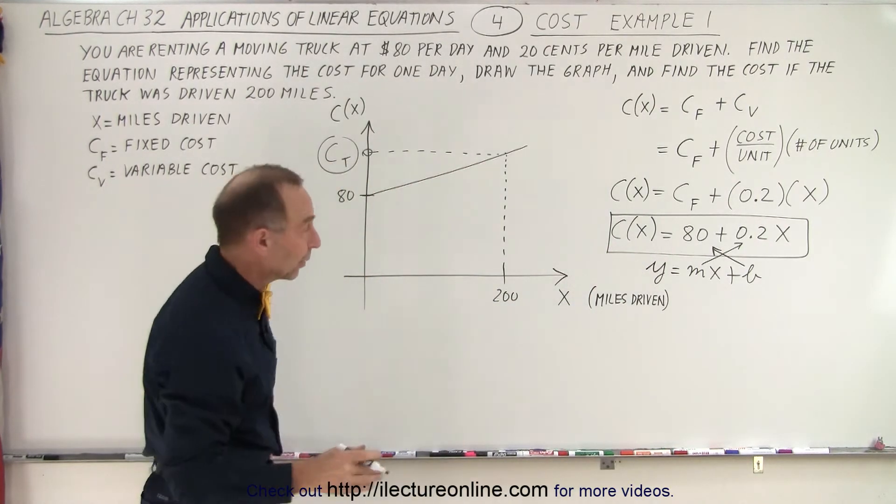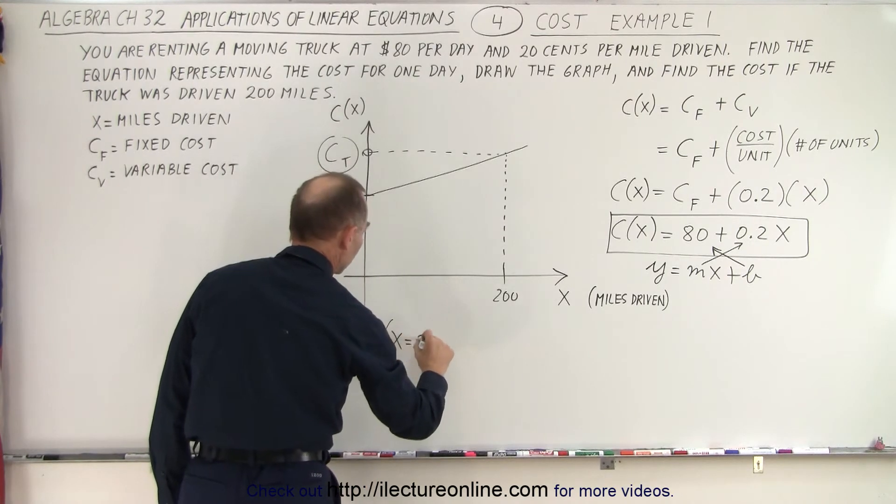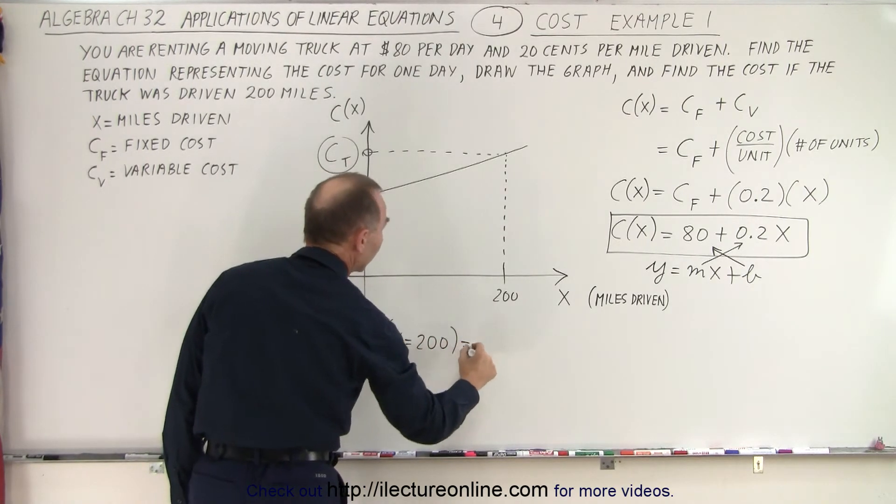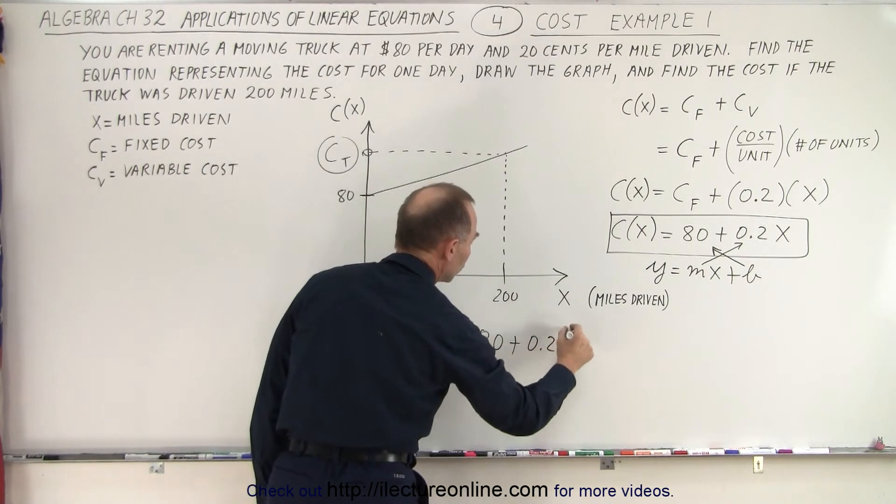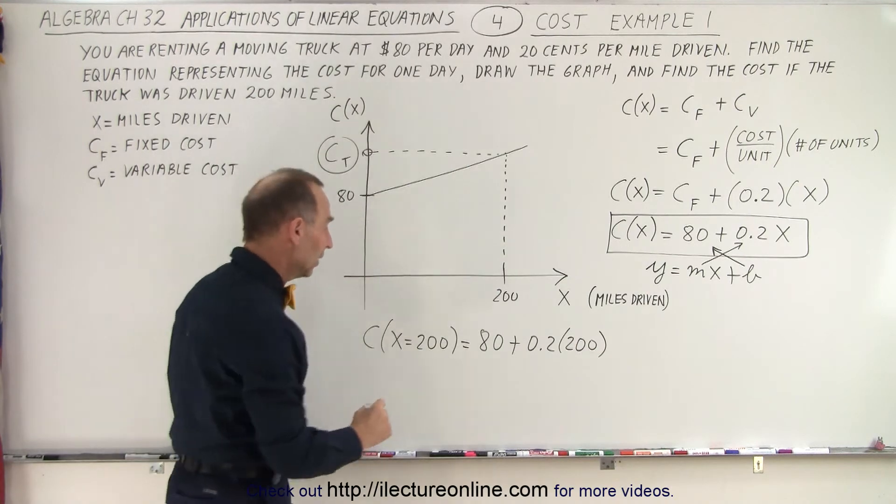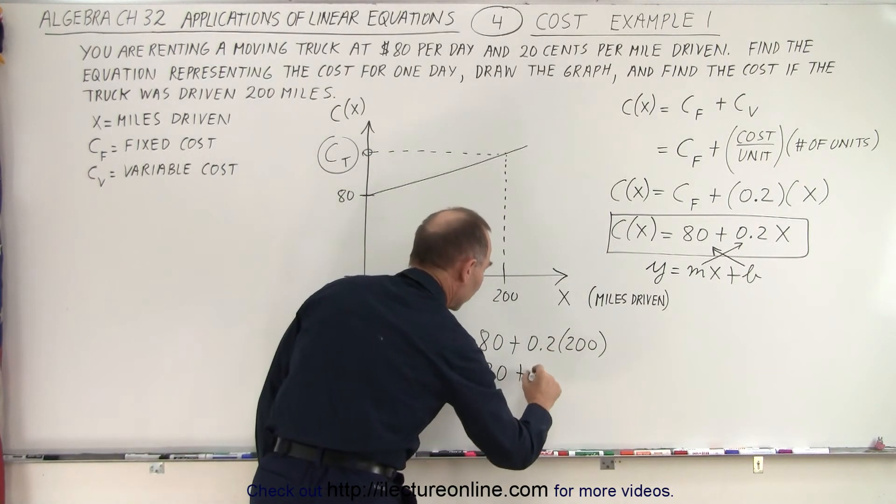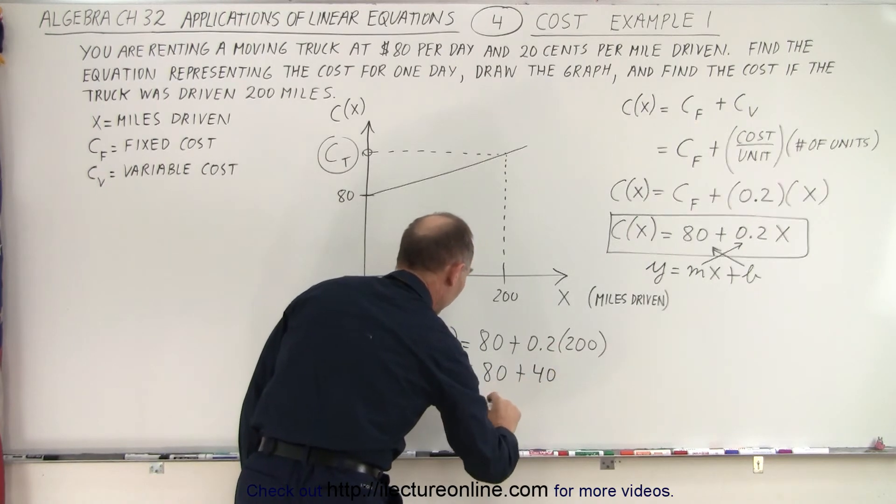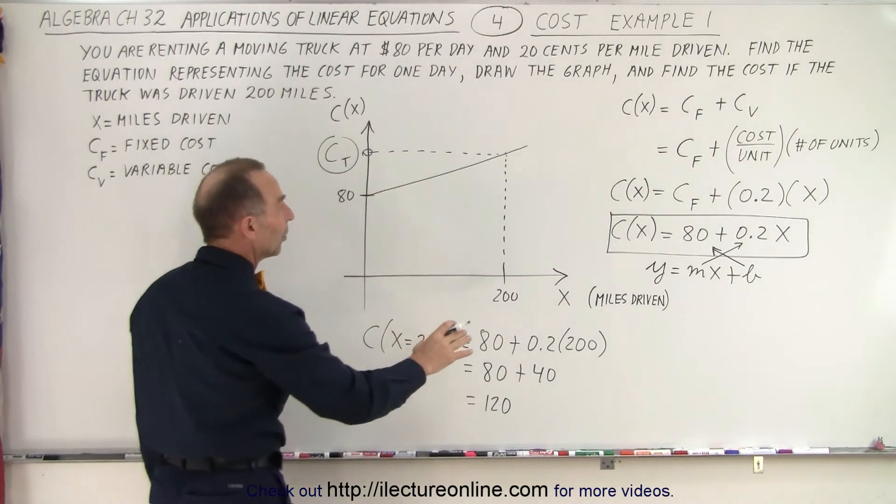Now let's go ahead and calculate what that is equal to. So C, when x is equal to 200, is equal to 80 plus 0.2 times 200. So we simply plug in 200 for x. And so this ends up being 80 plus 0.2 times 200. That is 40. And so that's equal to 120.